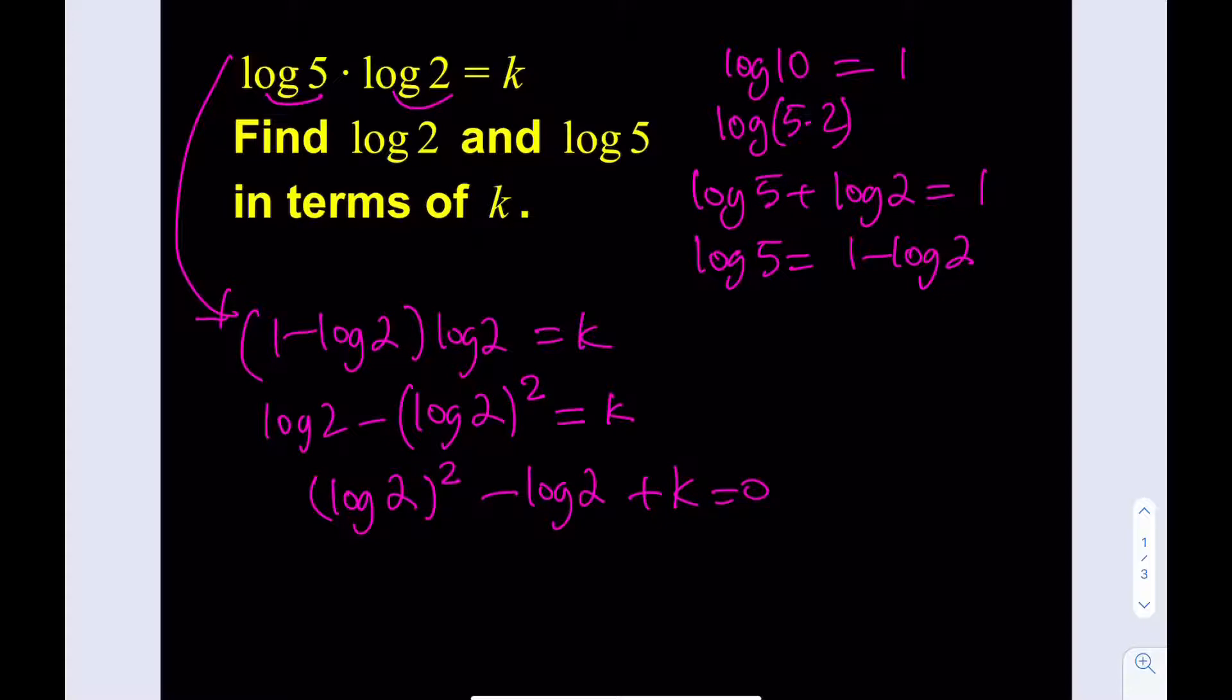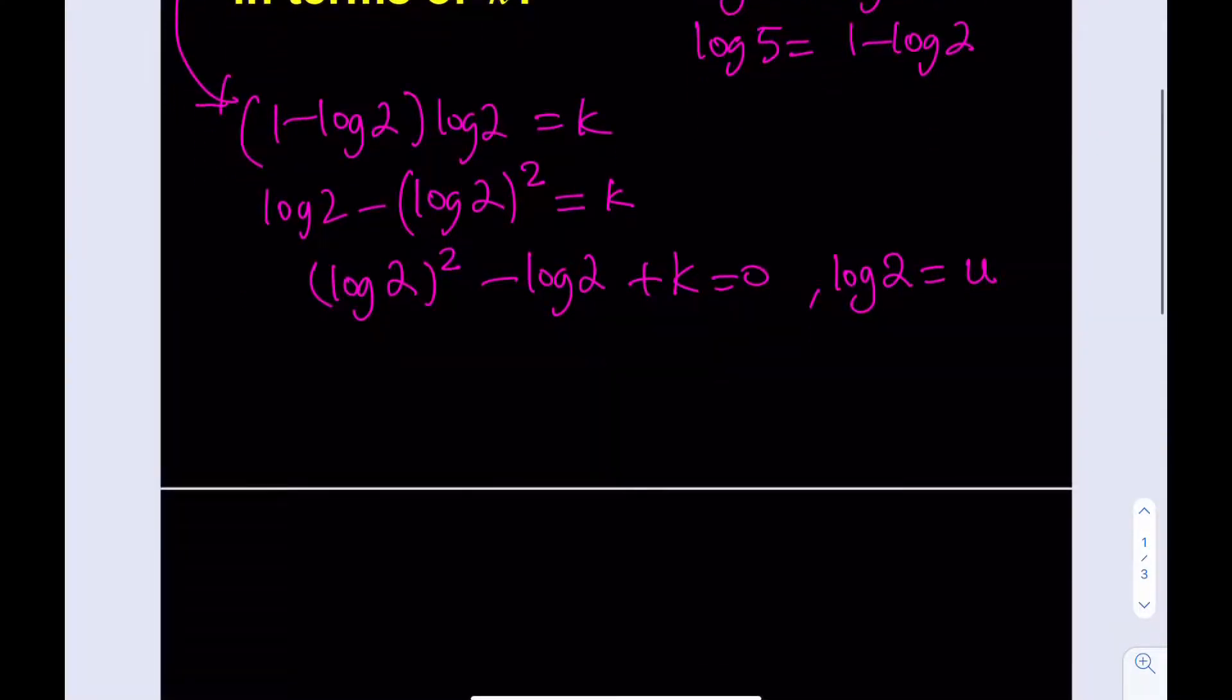I'm going to solve this equation because my goal is to find log 2 in terms of k. I'll designate log 2 as u so I can use substitution. This equation gives me u squared minus u plus k equals 0. This is a quadratic equation, and quadratic equations have two solutions normally, especially with the parameter k.